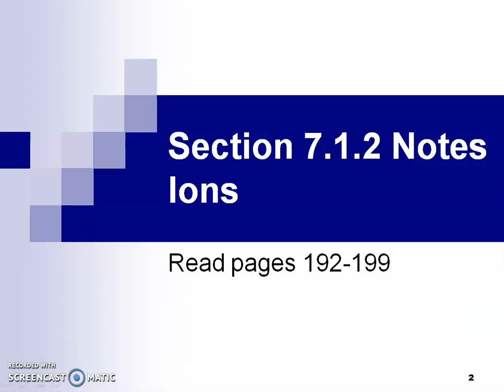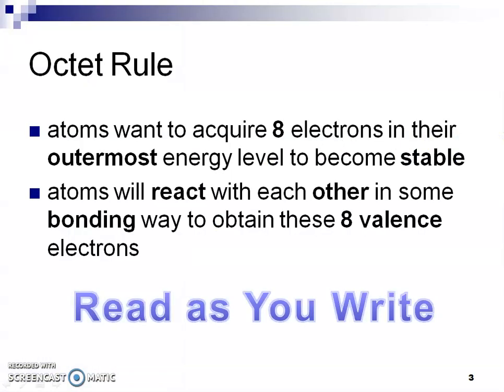This is Mrs. O'Neill for chapter 7 section 1 part 2: ions. In the last section you learned the valence electrons and how to draw those Lewis dot diagrams. Well, how does that help us figure out how an atom becomes an ion? Pause the video, read and fill in those blanks, and then play to hear my words.